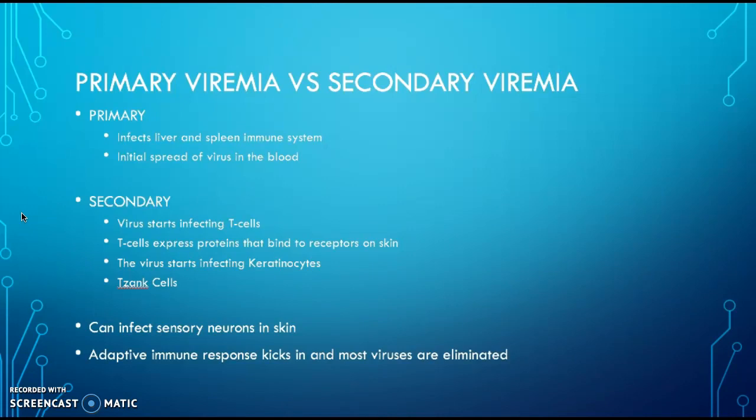Around two weeks after entering the body comes the secondary viremia stage, when the virus starts infecting the T cells. The T cells express proteins that bind to receptors on the skin, so this is kind of like hitching a ride in T cells to get to the skin. Once it reaches the skin, the virus is going to infect keratinocytes, which are skin cells. All the infected cells can start fusing together, which is why you see chickenpox spread over the body in clusters.